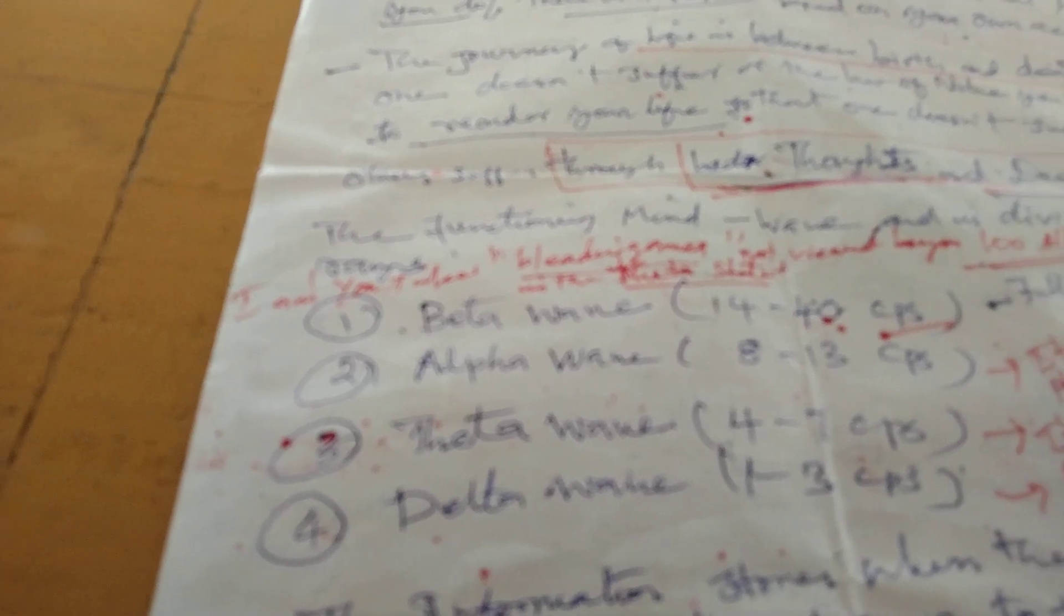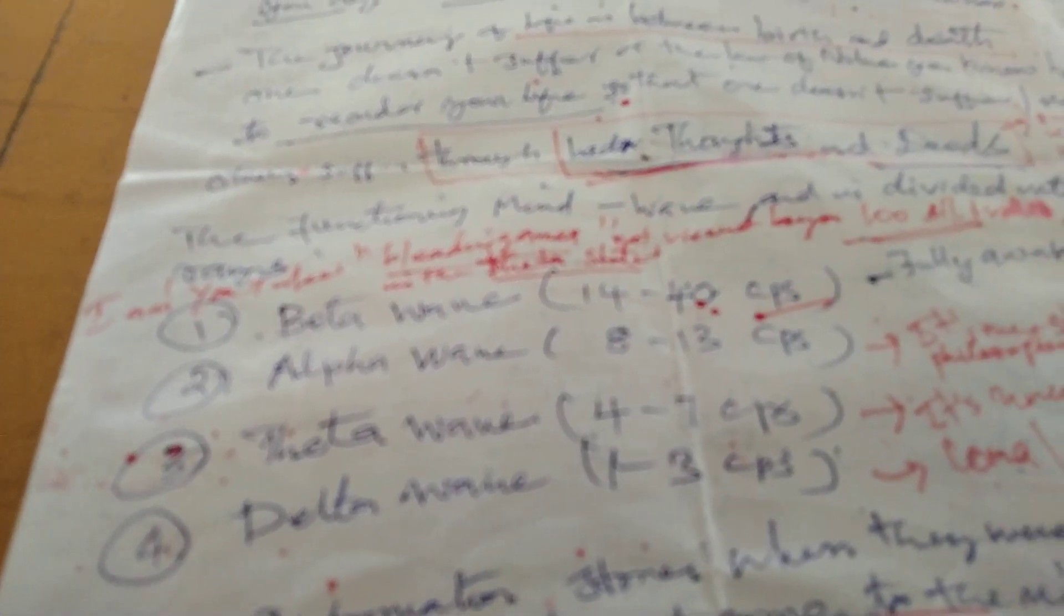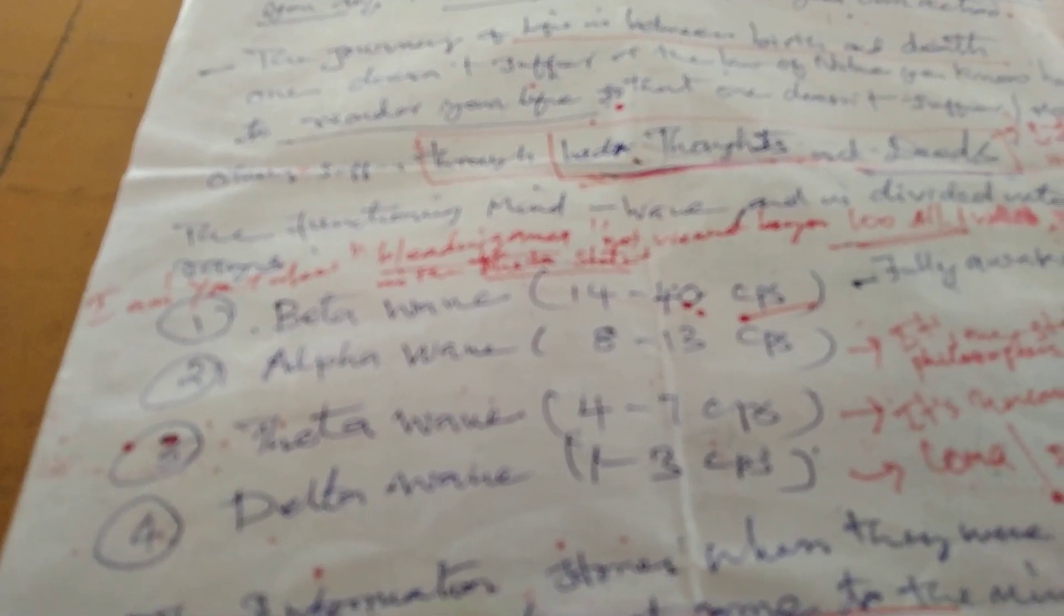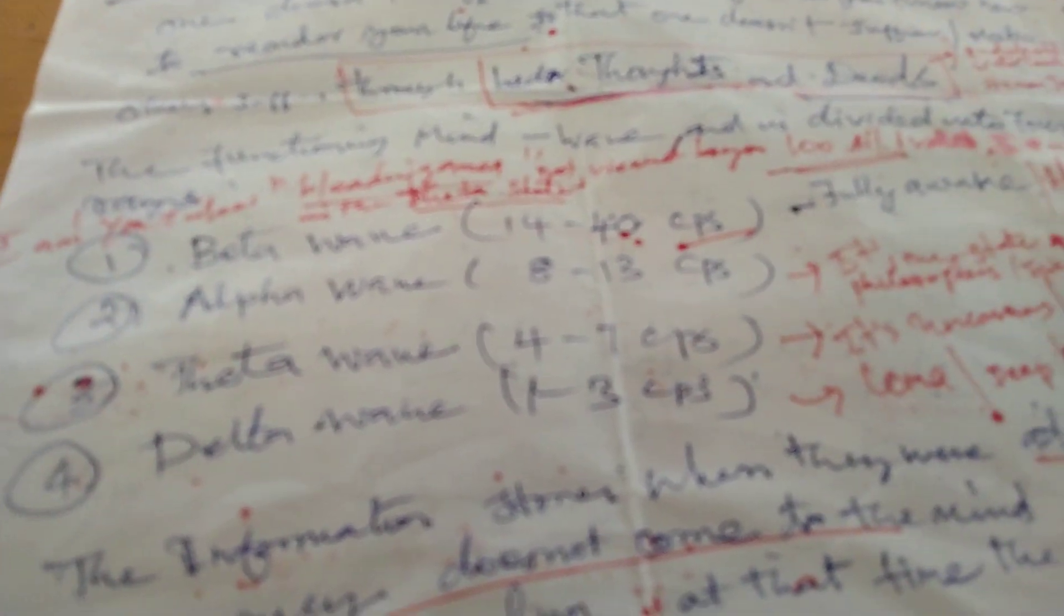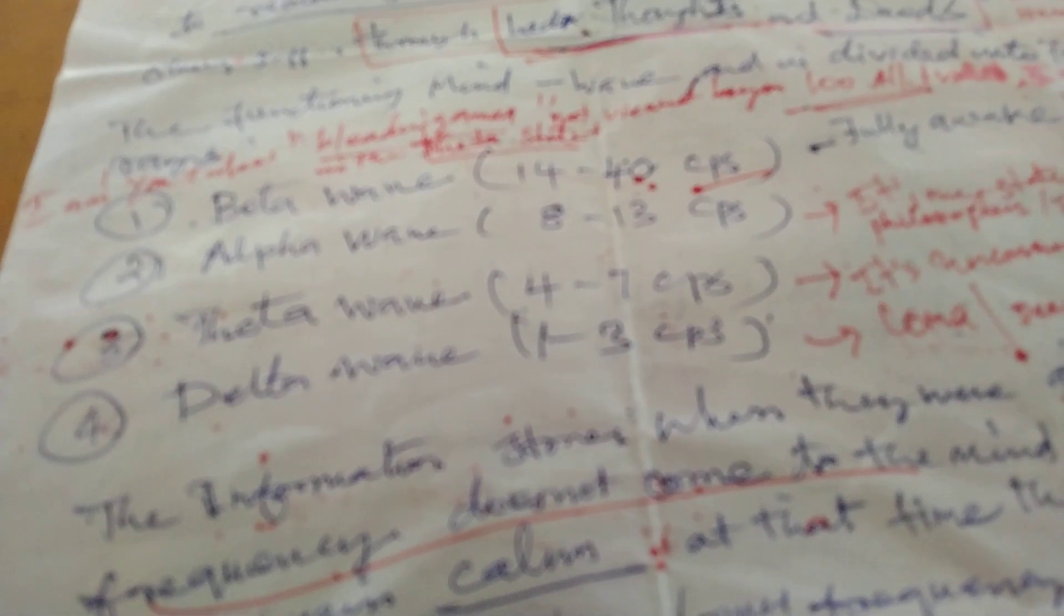The functions of mind waves are divided into four ranges. Beta waves, 14 to 40 CPSC, fully awake. A successful man state is beta state. Alpha waves, 8 to 13 CPSC, the state of saints, disciples, philosophers, scientists, and working class people. Theta waves, unconscious, senseless state or mad state. Delta waves, 1 to 3 CPSC, the coma and deep sleeping state.